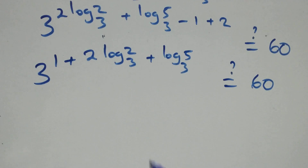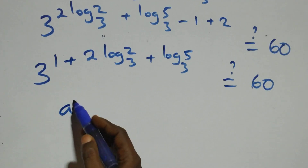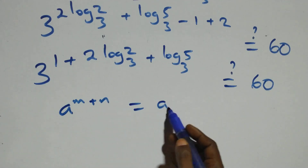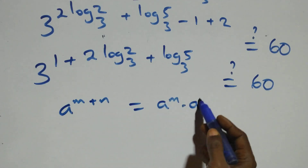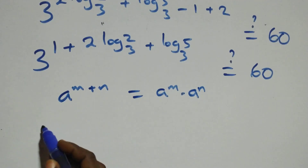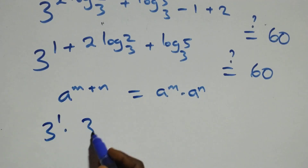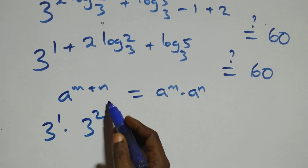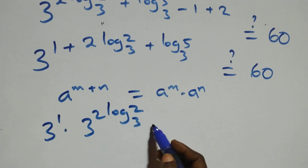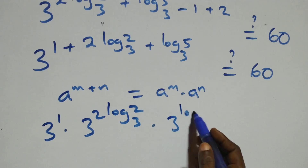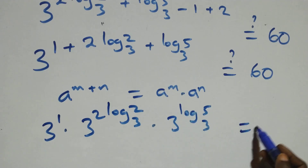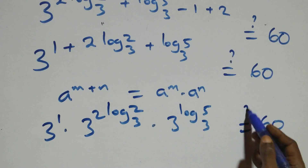We apply the exponential law: a to the power of n plus n is the same as a to the power n times a to the power n. So we have three raised to the power one, times three raised to the power two log two base three, times three raised to the power log five base three. Is it equal to sixty?